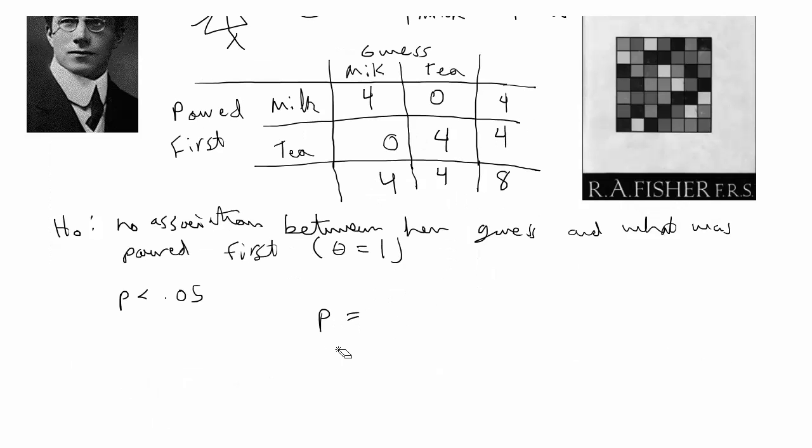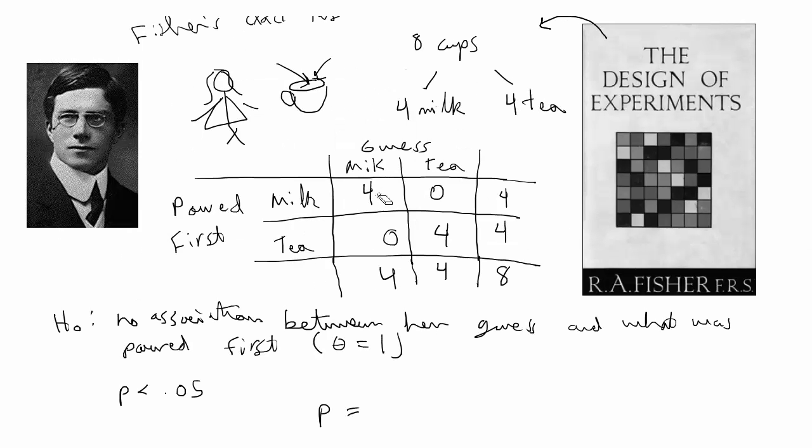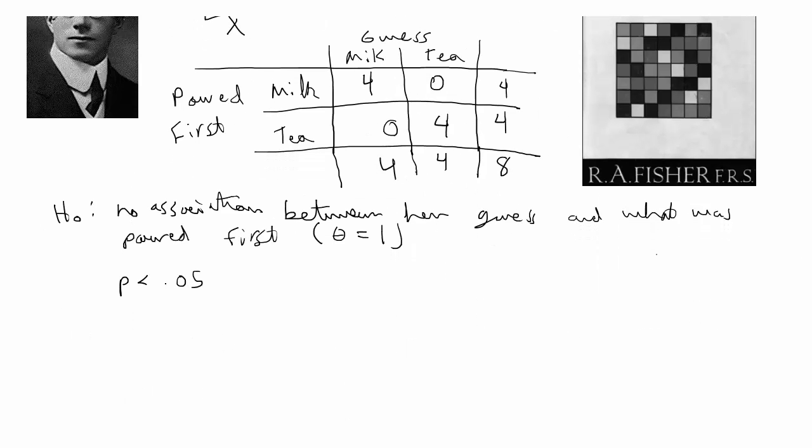He was only worried about asking her to pick which four the milk was poured in first, because obviously that would imply that the other four had tea poured in first, and she was given the knowledge that she would have eight cups, and half would have milk, and half would have tea poured in first. The total number of possible combinations would be 8 choose 4, and that equals 70.